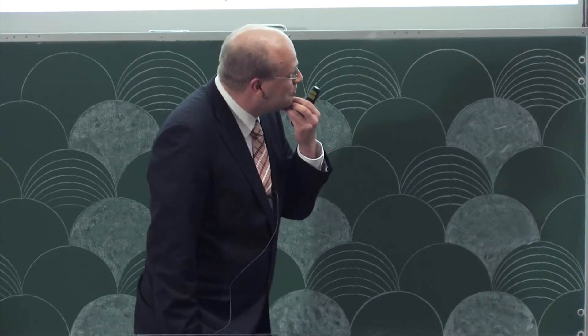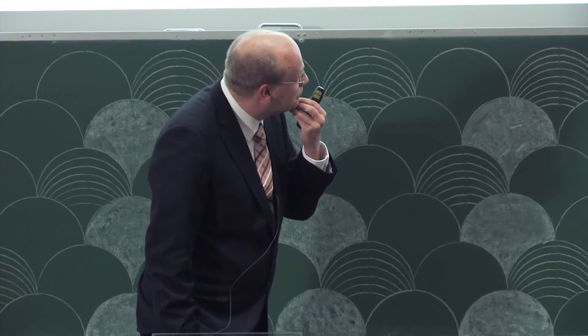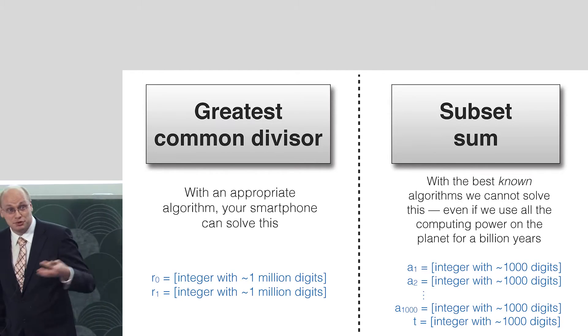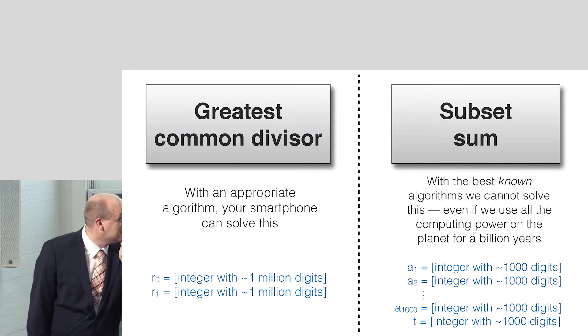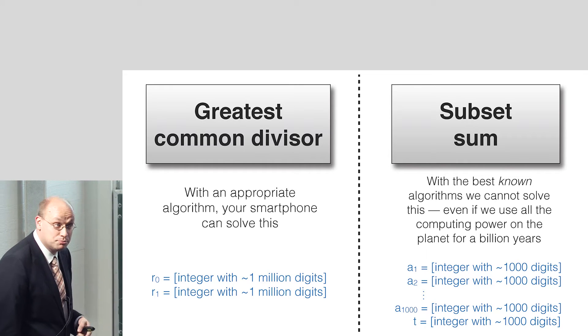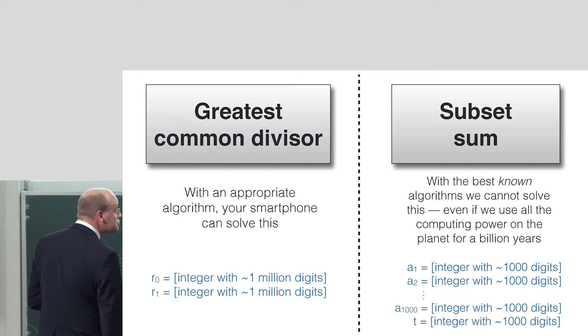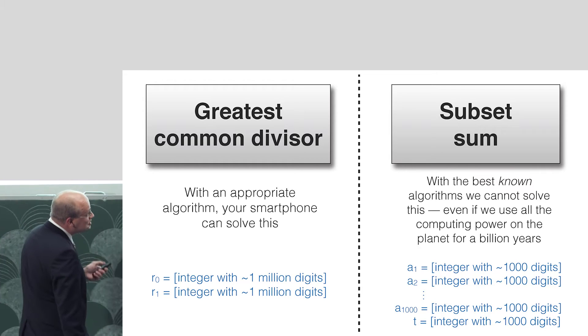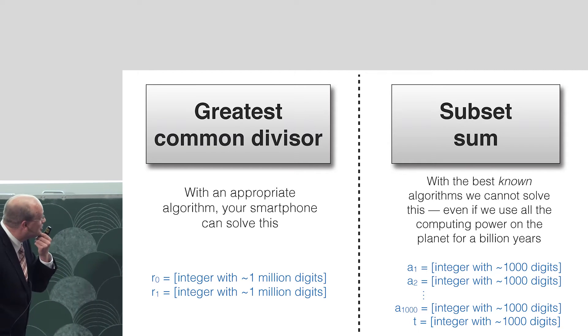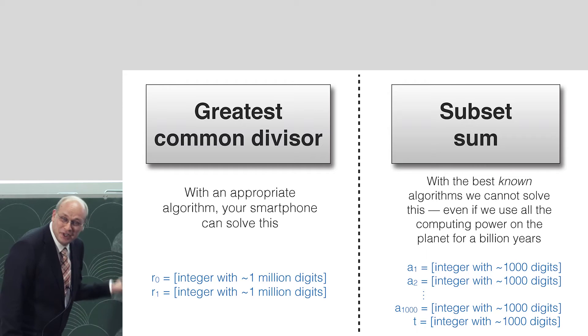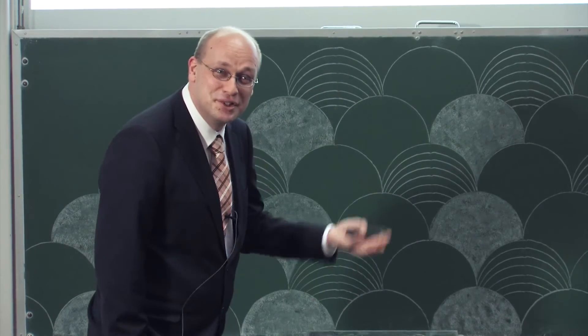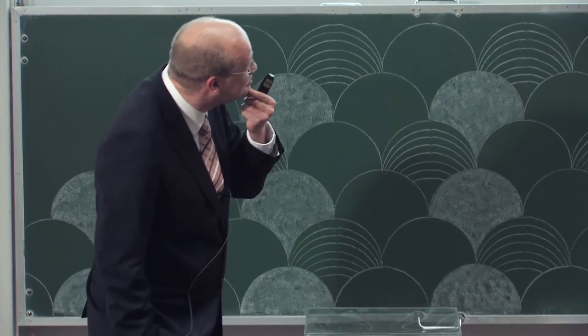Now we start seeing that these problems differ in the sense that with an appropriate algorithm, the left-hand side thing you can run on your smartphone. It has perfectly sufficient compute capability to solve this. But on the right-hand side, even with the best known algorithms to humanity, we cannot solve this problem. We have no idea how to do it efficiently. Even if we use all the computing power on the planet, all of this immense computing power.